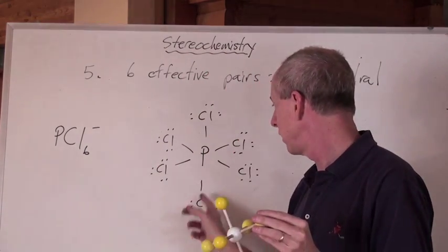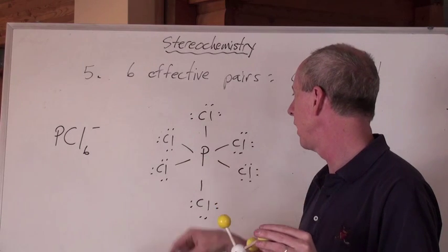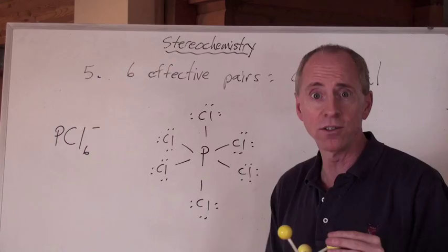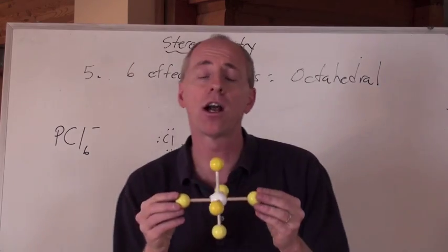And for this molecule in particular, you just take the lone pairs off here and draw it like that, dotted lines here, wide bonds there, and you get yourself that octahedral shape.